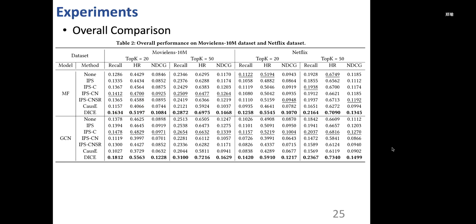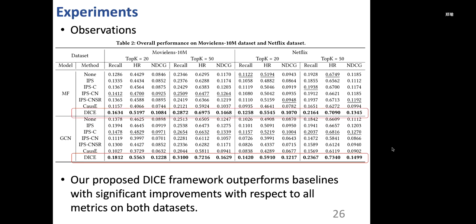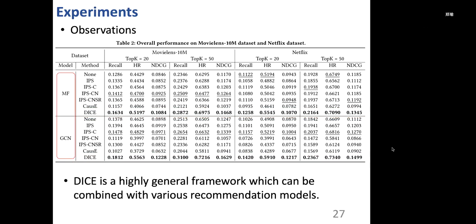Here is the overall performance of all methods on two datasets. And we have some observations. The first one is our proposed DICE framework outperforms baselines with significant improvements with respect to all metrics on both datasets. The second observation is that DICE is a highly general framework, which can be combined with various recommendation models.